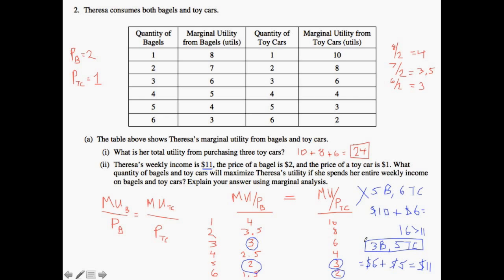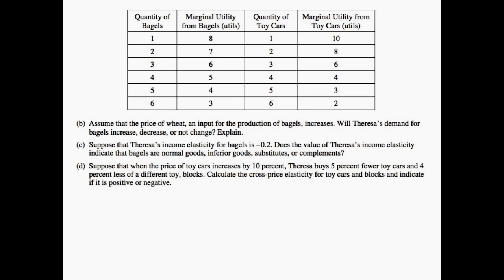So again to make sure that you understand that intuition we essentially want to find where the last dollar Teresa spent on a bagel equals the amount of utility that she derives from the last dollar spent on a toy car. We need to find the marginal utility to price ratio, see where they're equal to one another and then test what's actually feasible. In this case we were given that the income was $11 and therefore the actual pricing needs to make sense. The first case that we tested, the 5 bagels and 6 toy cars, didn't make sense because $16 is greater than $11.